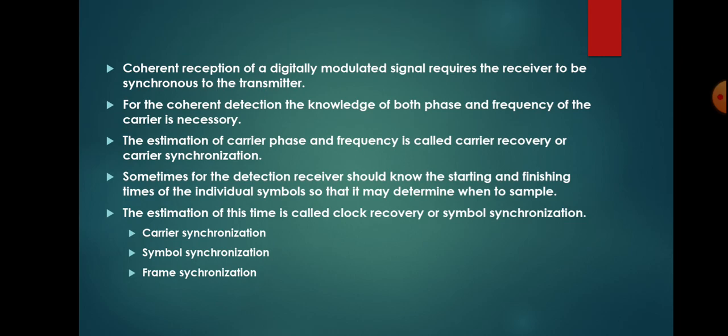The estimation of the carrier phase and frequency is called carrier recovery or carrier synchronization. In some cases, the detection receiver should know the starting and finishing times of the individual symbols so that it may determine when to sample. The estimation of this time is called clock recovery or symbol synchronization. Different types of synchronizations are: carrier synchronization, symbol synchronization, frame synchronization, and bit synchronization.